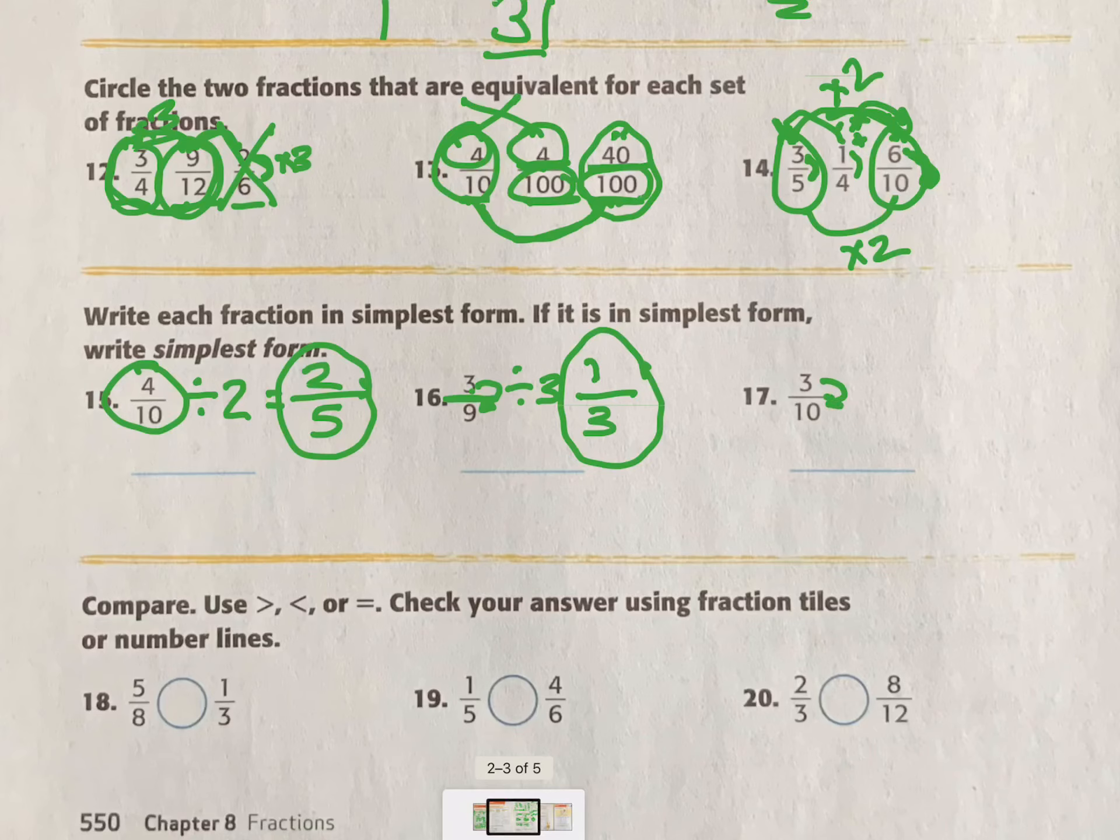And then can 3 go into 10? No. Does 3 have any other factors besides 1 and itself? No, because it's prime. So 3/10, it is in simplest form.